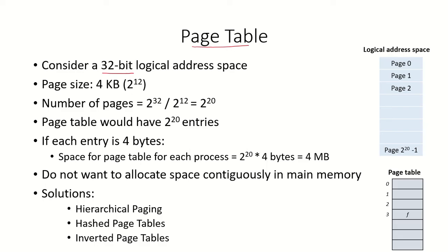Let's consider a 32-bit logical address space, so the total number of addresses possible are 2 to the power of 32. Assuming this is a byte-addressable memory, that gives us 2 to the power of 32 bytes. If our page size is 4 kilobytes, the number of pages in the logical address space would be 2^32 divided by 2^12, which gives us 2 to the power of 20 pages.